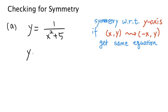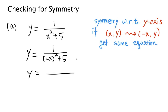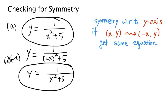I'm going to keep y the same and replace x with negative x, and see what happens. Negative x squared is negative x times negative x. Multiplying two negative signs gives you a positive sign, so this is the same as positive x squared. This result is exactly the same as the original equation. Now I'm going to show you the graph of this equation in a moment, but let's think about this.